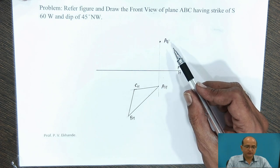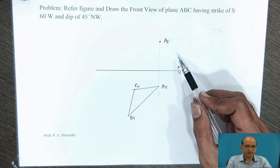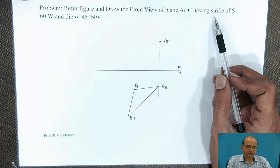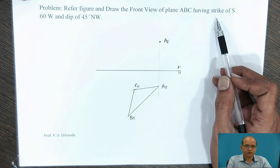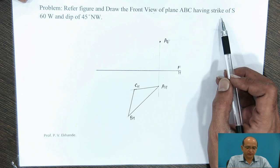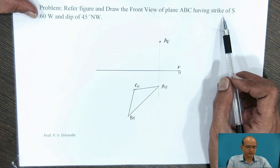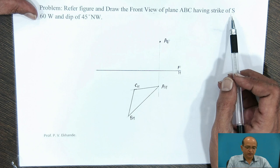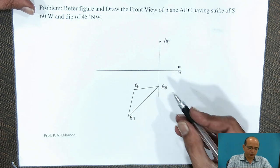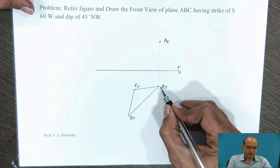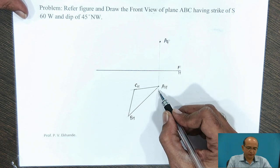Now, what is the first step? The first step is to complete the strike line in the top view. The strike of the plane has been given as South 60 West, so we will consider point A and with respect to that, determine where to complete the strike line.